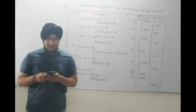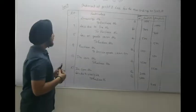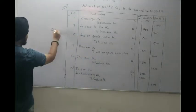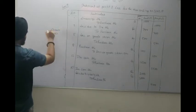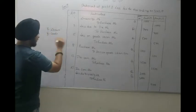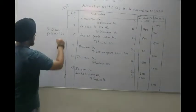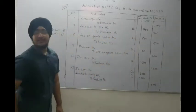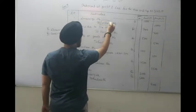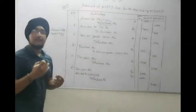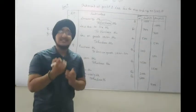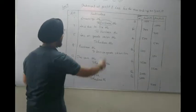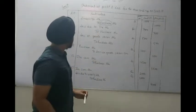First transaction: Goods of Rs.1000 is withdrawn from business for personal use. When goods are withdrawn for personal use, two things are involved — Drawings (personal account) and Goods (real account). Goods go out, so goods account is credited, and the owner (receiver) is debited. Journal entry: Drawing account debit 1000 to Purchase account. Note: goods are not sold here, so we don't write Sales. Since goods leave in other ways, Purchase is reduced — that's why Purchase account is credited.